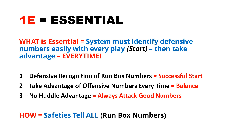So what is essential? The system must be able to identify defensive numbers easily with every play at the start, so we can take advantage of them every time. Number one, this gives us defensive recognition of our run box numbers, giving us that successful start. We want to make sure we're taking advantage of those numbers every time, so we've got to be balanced in our thinking. The no huddle advantage is that you never run a bad play — you can always attack good numbers and put your players in position to be successful. No audible needed. The safeties tell all with your run box numbers.